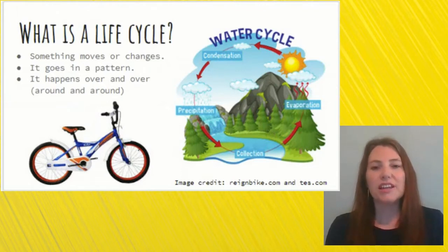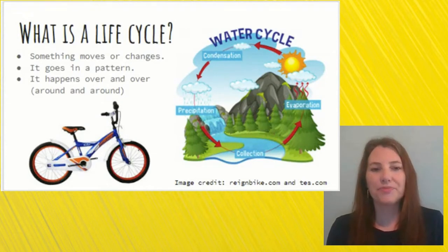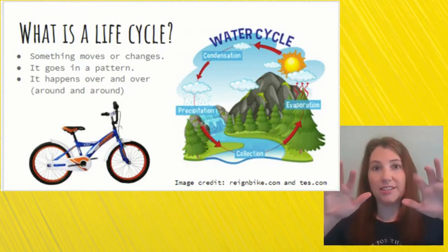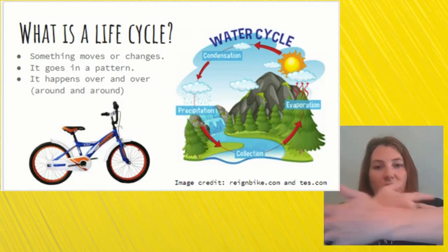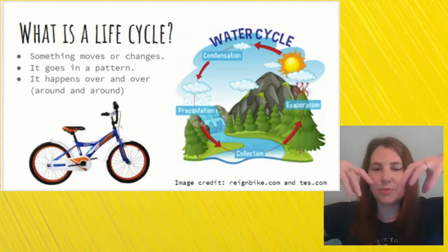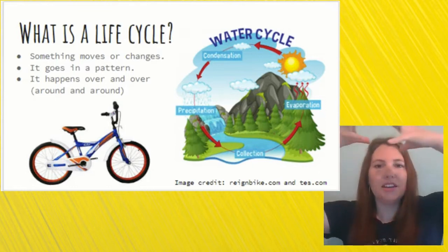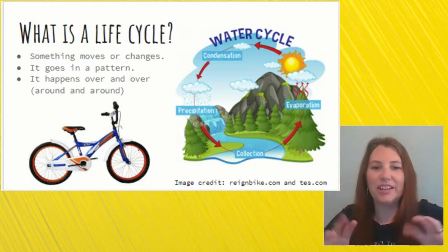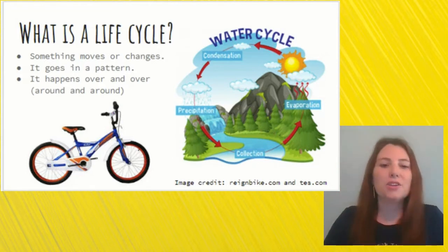We also learned in science this year about the water cycle, remember? Which means the water moves and changes, but then it starts all over again. It rains or precipitates, and then it collects on the ground, and it evaporates up into the air, and it condenses into clouds, and then it falls back down again as precipitation, and it goes over and over and over.